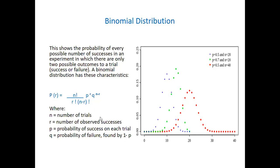N is the number of trials - that is the sample size. The number of trials is the number of experiments. If your sample size is 400, for each variable the number of trials is 400 because you carry out that experiment for 400 people. It's the same if you throw a coin or a die 100 times - that's the number of trials. N is the sample size, r is the number of observed successes.